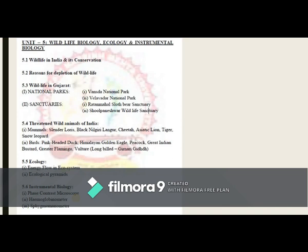In Unit 5, Wildlife Biology, Ecology, and Instrumental Biology, the subunits are: 5.1 wildlife in India and its conservation; 5.2 reasons for depletion of wildlife in India; 5.3 wildlife in Gujarat, including Vansda National Park, Velavadar National Park, Ratan Mahal Sloth Bear Sanctuary, and Shoolpaneshwar Wildlife Sanctuary. Subunit 5.4 covers threatened wild animals of India: in mammals — Slender Loris, Black-footed Langur, Cheetah, Asiatic Lion, Tiger, and Snow Leopard; in birds — Pink-headed Duck, Himalayan Golden Eagle, Peacock, Great Indian Bustard, Greater Flamingo, Vulture, and Long-billed Curlew.